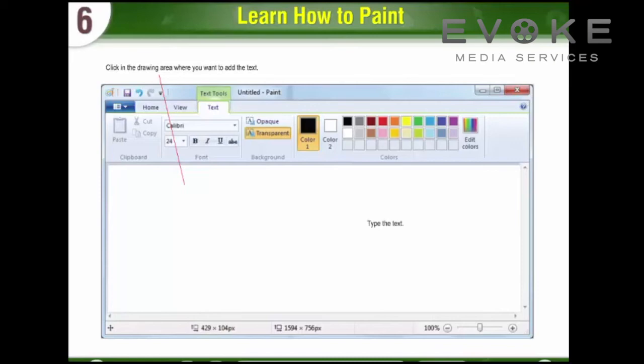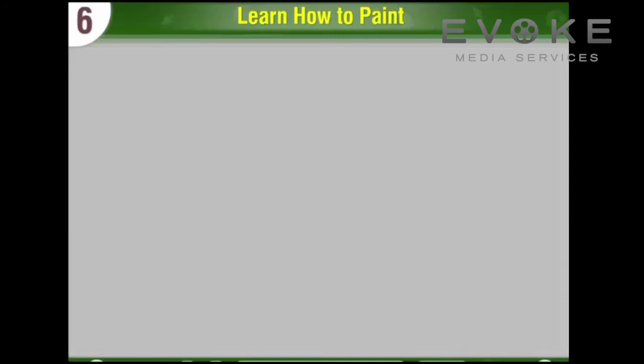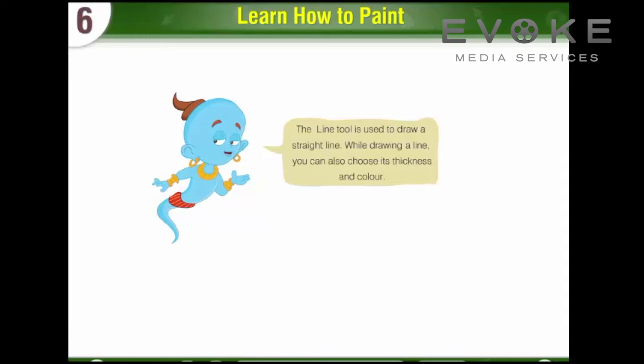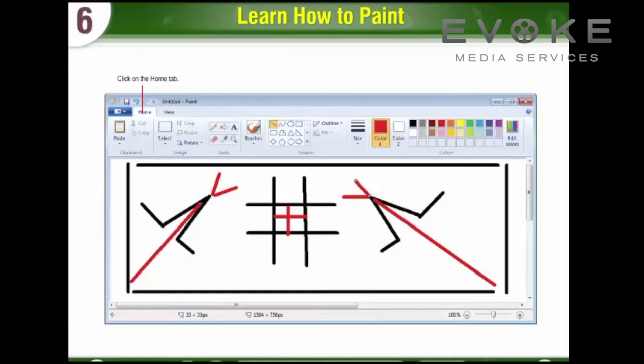Line Tool: The Line Tool is used to draw a straight line. While drawing a line, you can also choose its thickness and color. First, click on the Home Tab. Second, click on the Line Tool. Third, select the size and thickness. Fourth, select a color to draw. Fifth, drag the mouse inside the drawing area to draw a line. The line will be drawn.